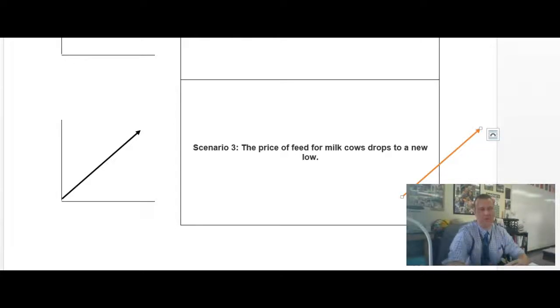So let's look at scenario three right now. It says the price of feed for milk cows drops to a new low. So initially, when you think that you see drops and your mind is triggered to think negative, right, it's dropping, it's decreasing. It's actually not when we reread it.